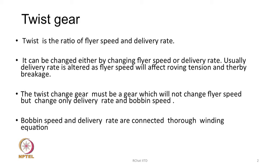Usually what we do is change delivery rate, as flyer speed will affect roving tension and thereby can affect breakage. Once we choose a flyer speed, we generally do not want to change it unless there is a specific need. If we want to adjust twist, we generally do so by manipulating delivery rate, which can affect productivity to some extent.